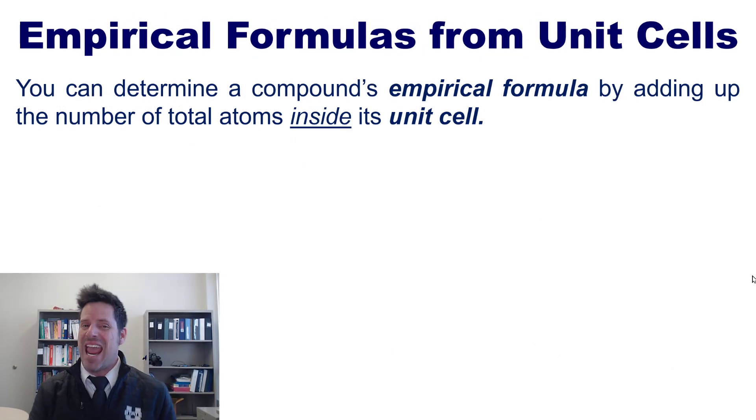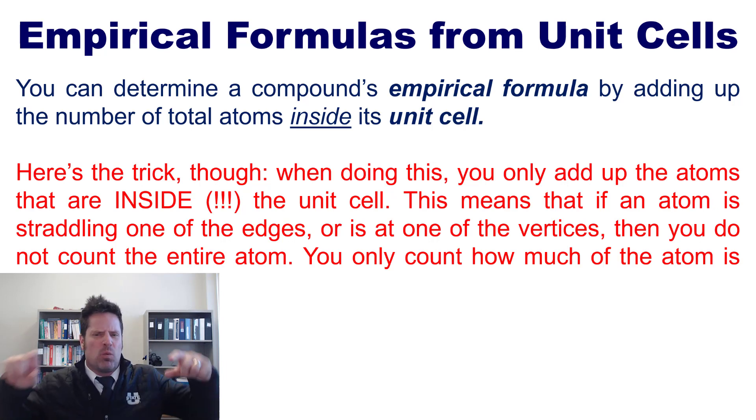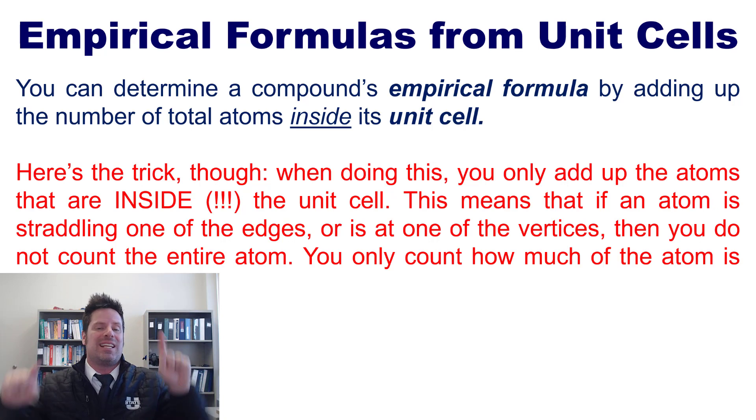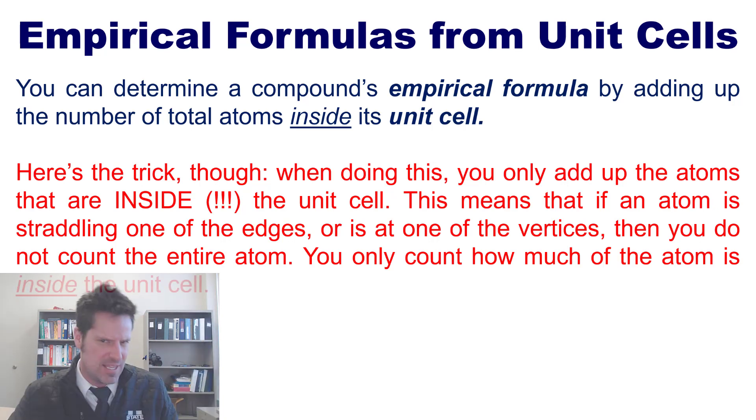As it turns out, you can determine a compound's empirical formula by adding up the number of total atoms inside its unit cell. Here's the trick though. When doing this, you only add up the atoms that are inside the unit cell. This means that if an atom is straddling one of the edges, or if it's at one of the corners, then you do not count the entire atom. You only count how much of that atom is inside the unit cell.